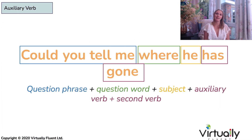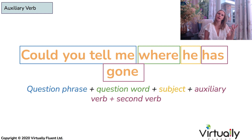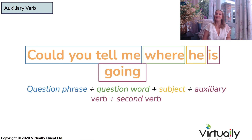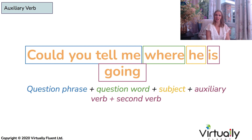It's also exactly the same with auxiliary verbs — they're also pushed to the end. For example, 'Could you tell me where he has gone?' Or 'Could you tell me where he is going?' It doesn't matter what tense you want to use, but we must follow this structure with auxiliary verbs.